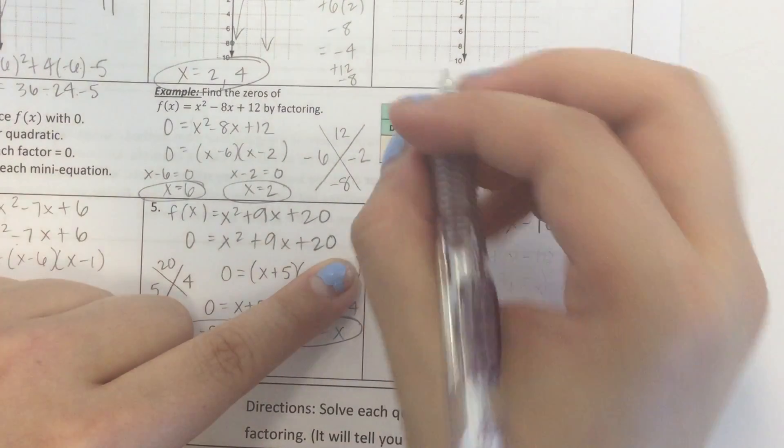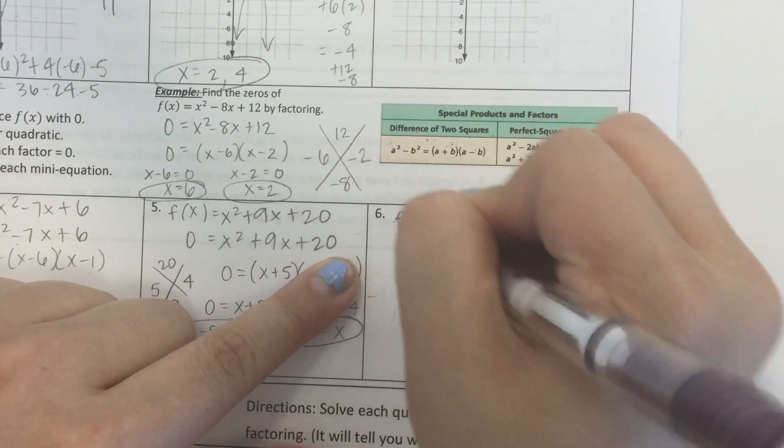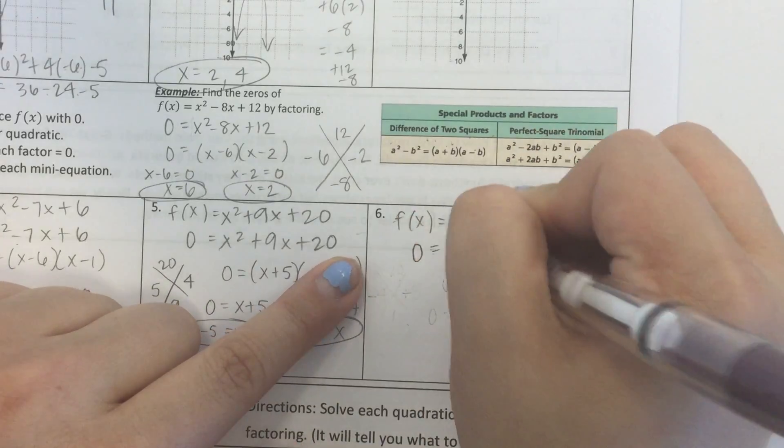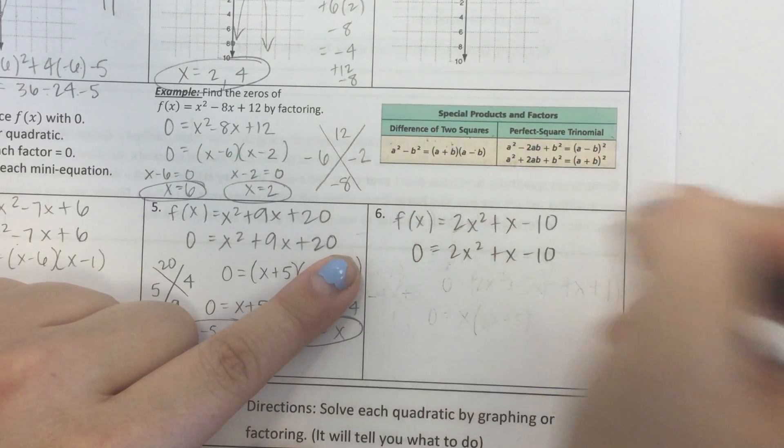Alright, this third example, here we go. 0 equals 2x squared plus x minus 10.